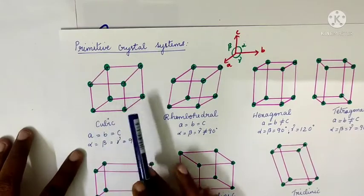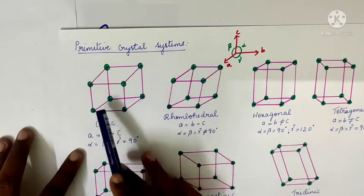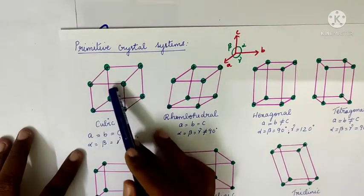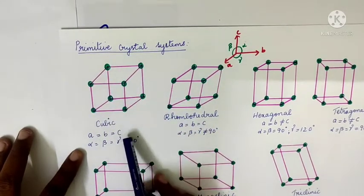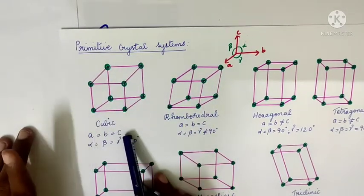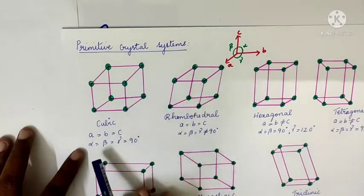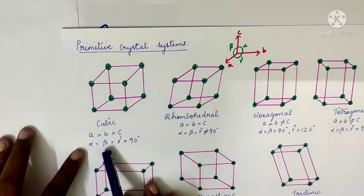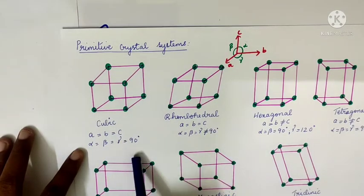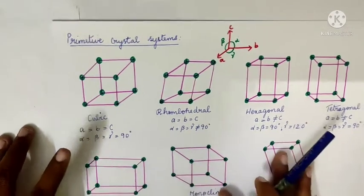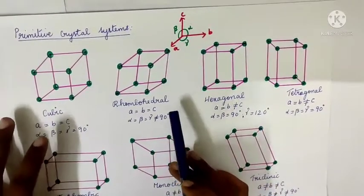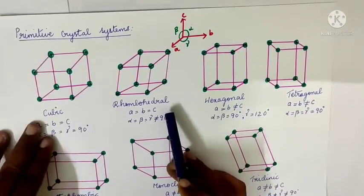The first is the cubic unit cell: edge lengths a, b, and c are all equal, and angles alpha, beta, and gamma are all 90 degrees.